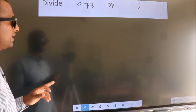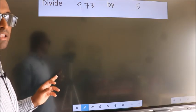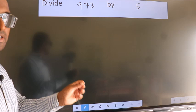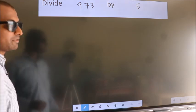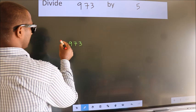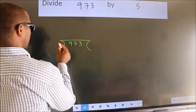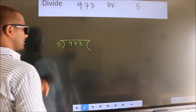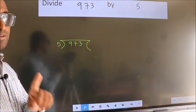Divide 973 by 5. To do this division, we should frame it in this way. 973 here, 5 here. This is your step 1.